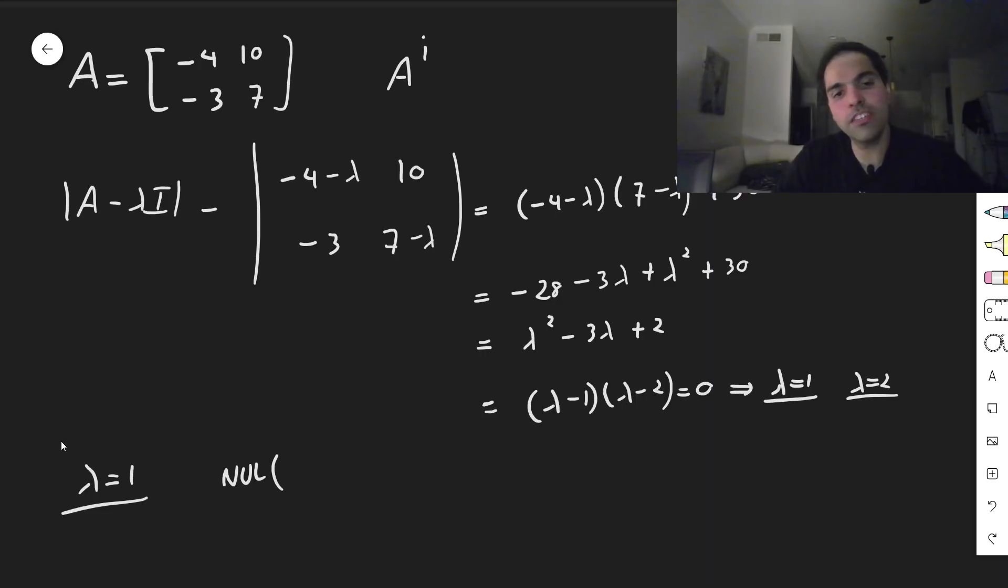So let's do null space of A minus I. So that's the null space of, so you plug in 1 for lambda, so I think minus 5, 10, minus 3, 6, which then you can row reduce and simplify to the null space of 1 minus 2, 0, 0.